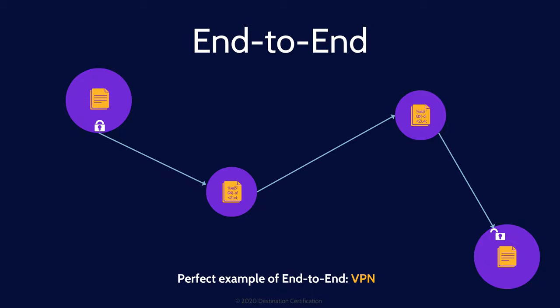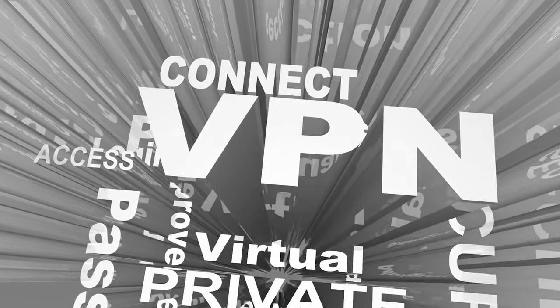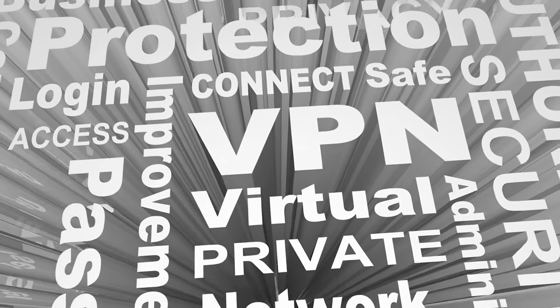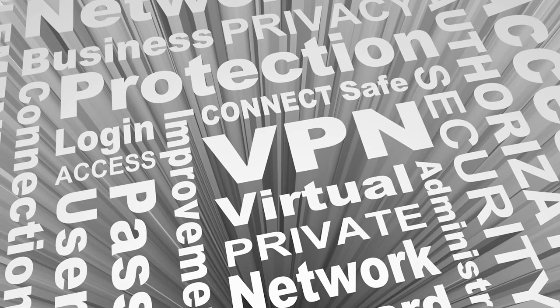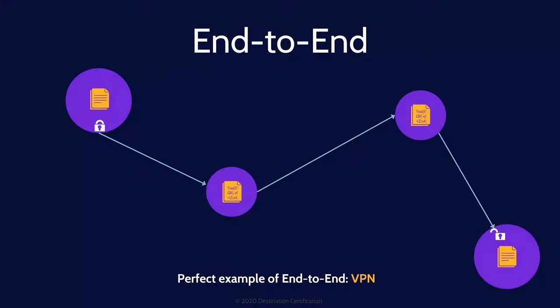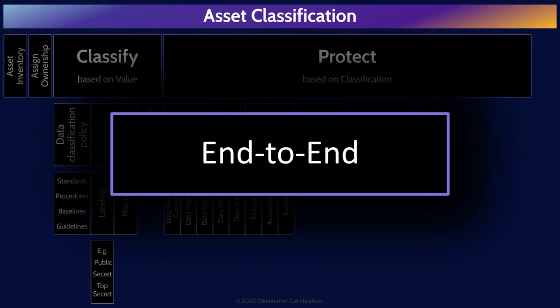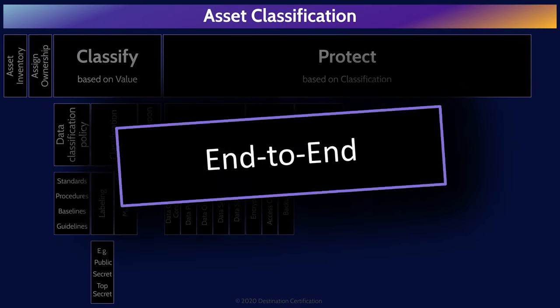A perfect example of end-to-end encryption is a VPN — a virtual private network. The downside of end-to-end encryption is that the routing information, such as the source and destination IP addresses, must be in plain text and visible to anyone, so end-to-end does not provide anonymity.